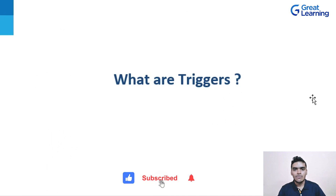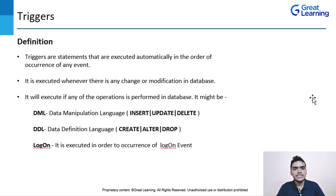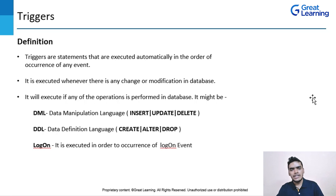Triggers are SQL statements or stored procedures that are executed automatically in response to any event. Now, what exactly does this mean and how can we implement triggers in a database? Whenever there is any change or modification in a database — whether in a row or in column values — the trigger will be executed.